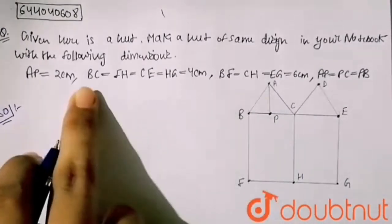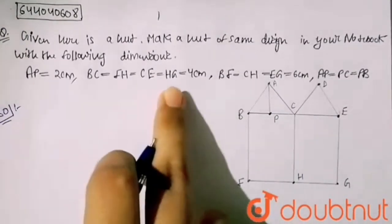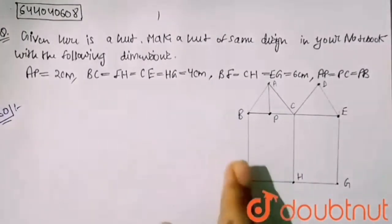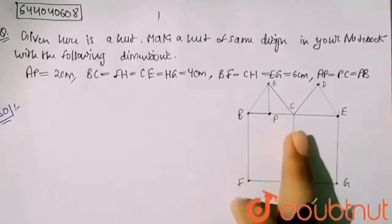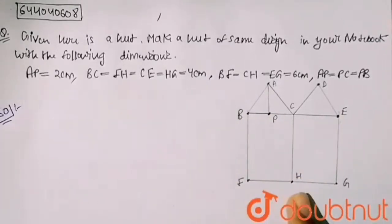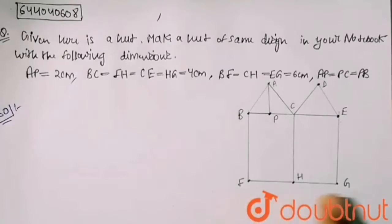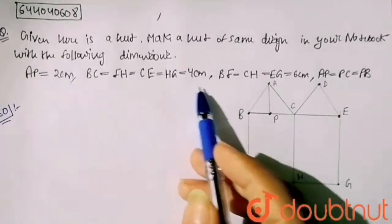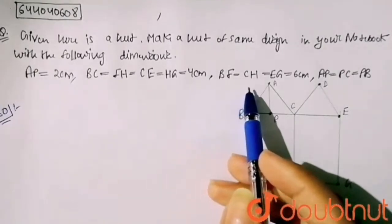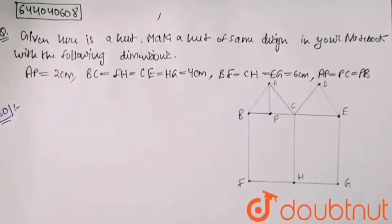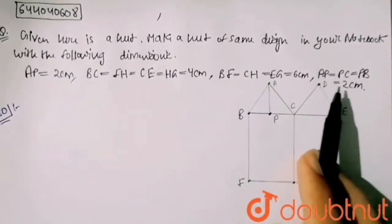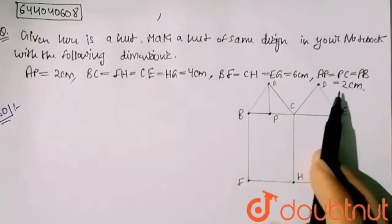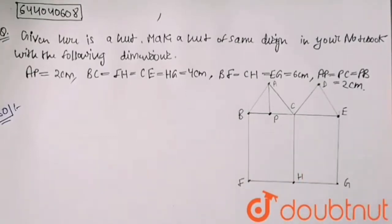My BC equals FG equals CE equals HD, so my BC is given, CE is given, FH is given, HG is given - all 4 cm. BF equals CH equals EG is 6 cm, and AP equals PC equals PB equals 2 cm.